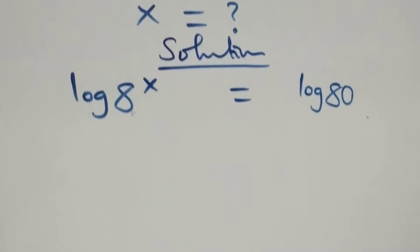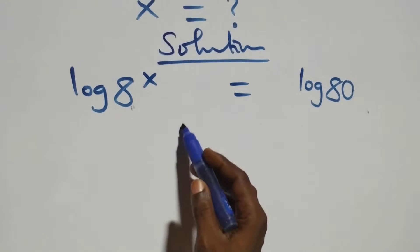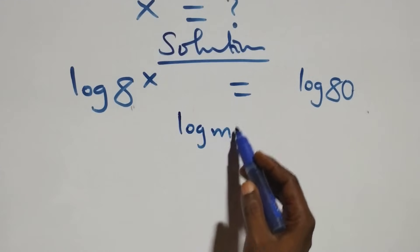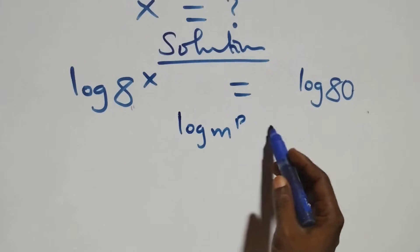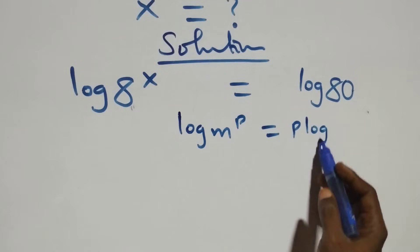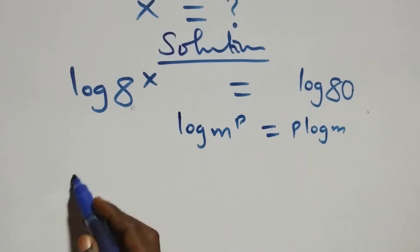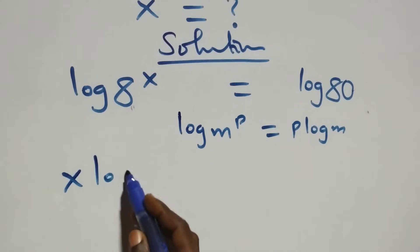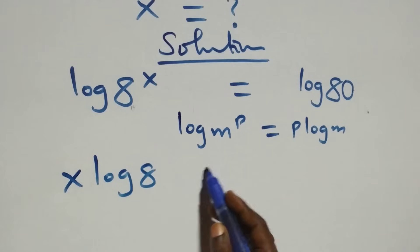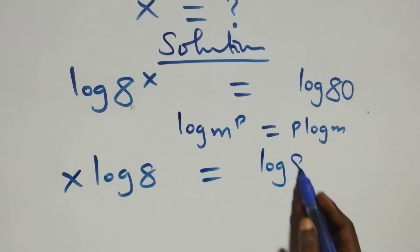The next step: we apply the power rule of logarithm. When we have log m raised to power p, it is the same as p times log m. So what we have becomes x times log 8 equals log 80 on this side.